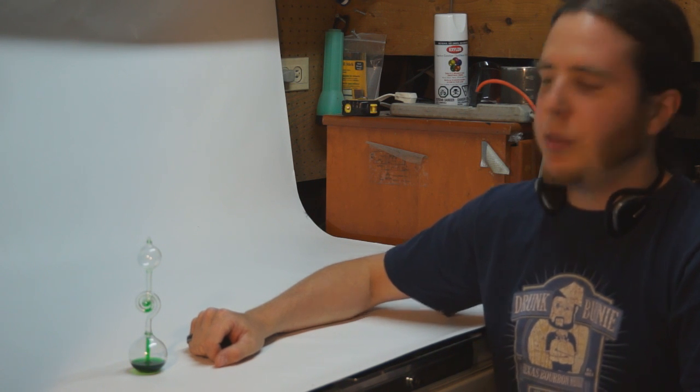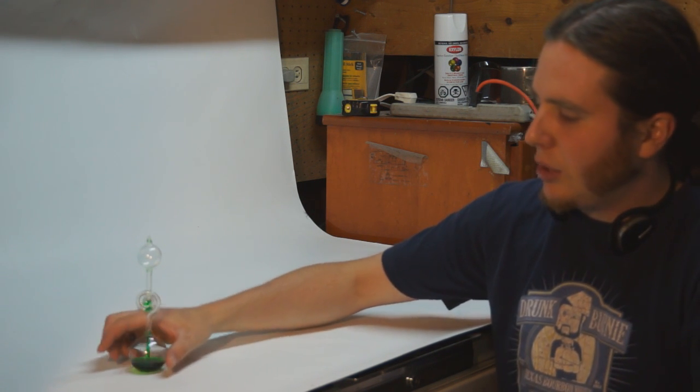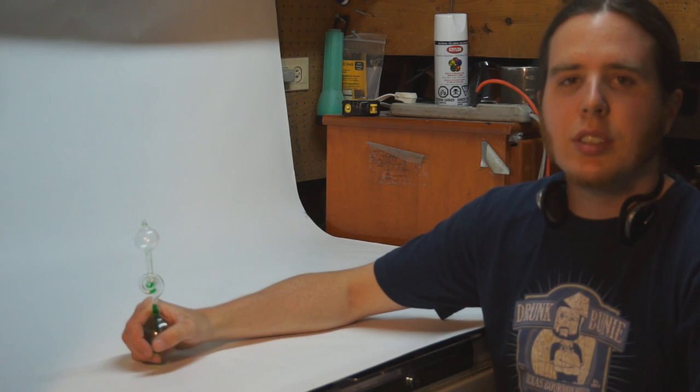It's called a hand boiler. It's made of two glass bulbs connected by a glass tube and filled with a volatile liquid, in this case dichloromethane.